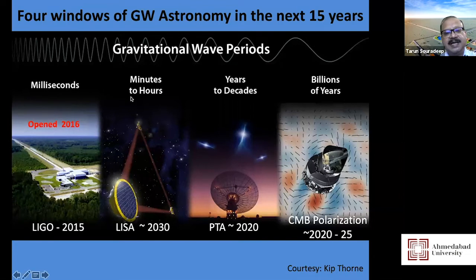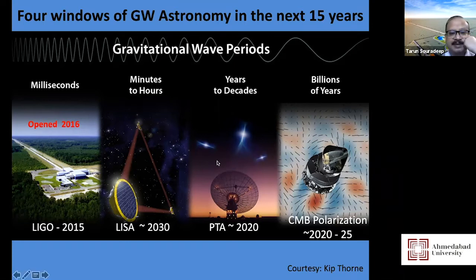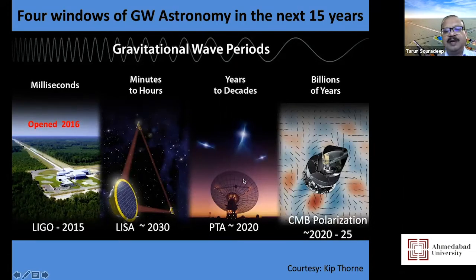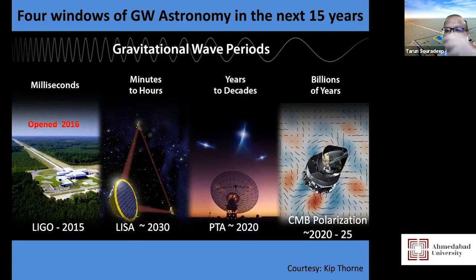LISA will involve white dwarf binaries, other binaries, or small black holes falling into very massive black holes. There is yet another window from pulsar timing experiments — a global effort involving radio astronomers with the biggest radio astronomy facilities, monitoring pulsars as clocks whose jitter would point to the existence of gravitational waves on year-to-decade time periods. These are signatures of supermassive black holes coalescing into each other.